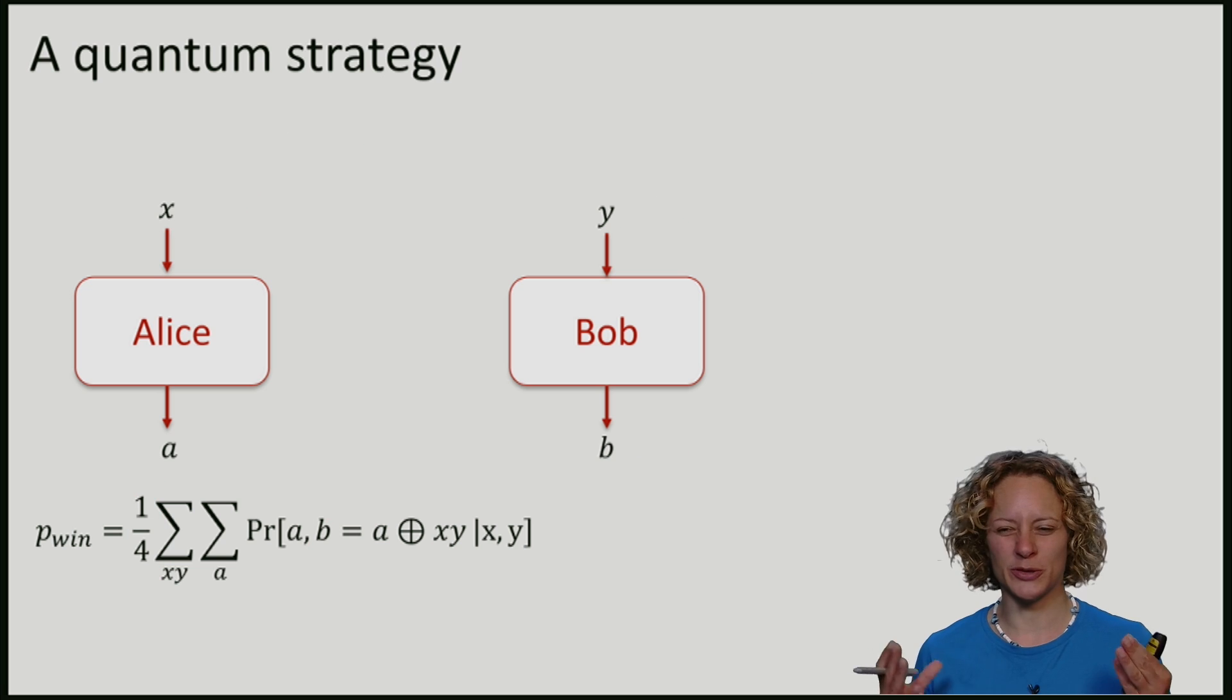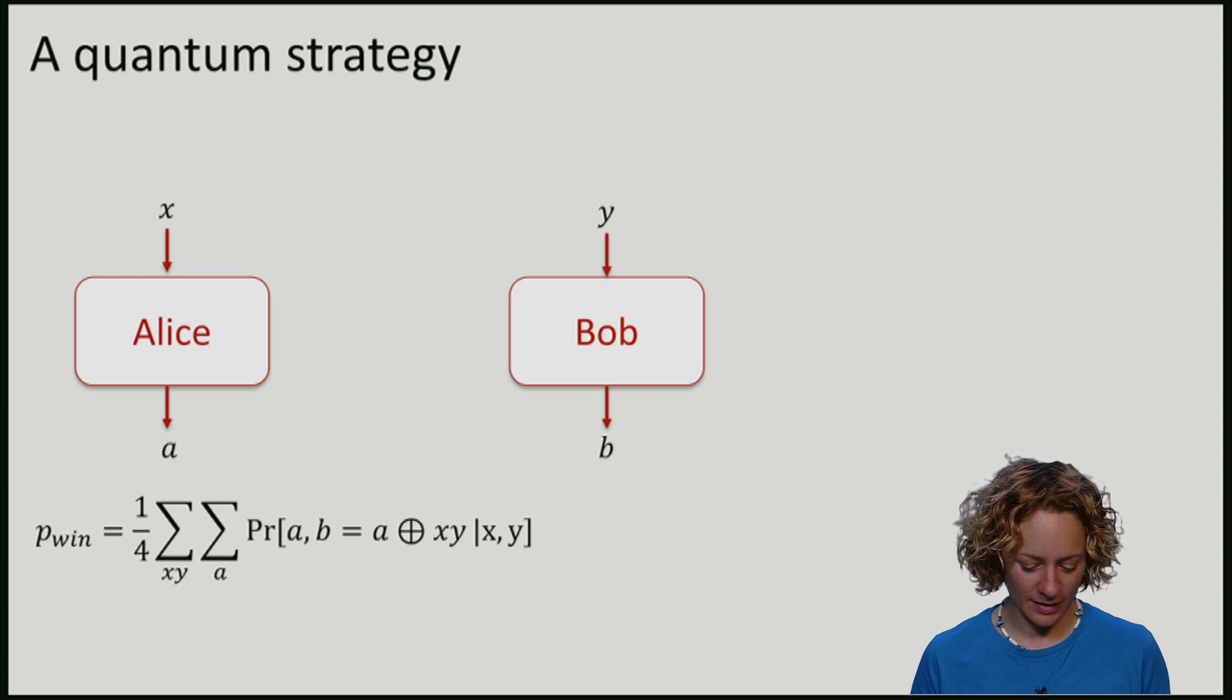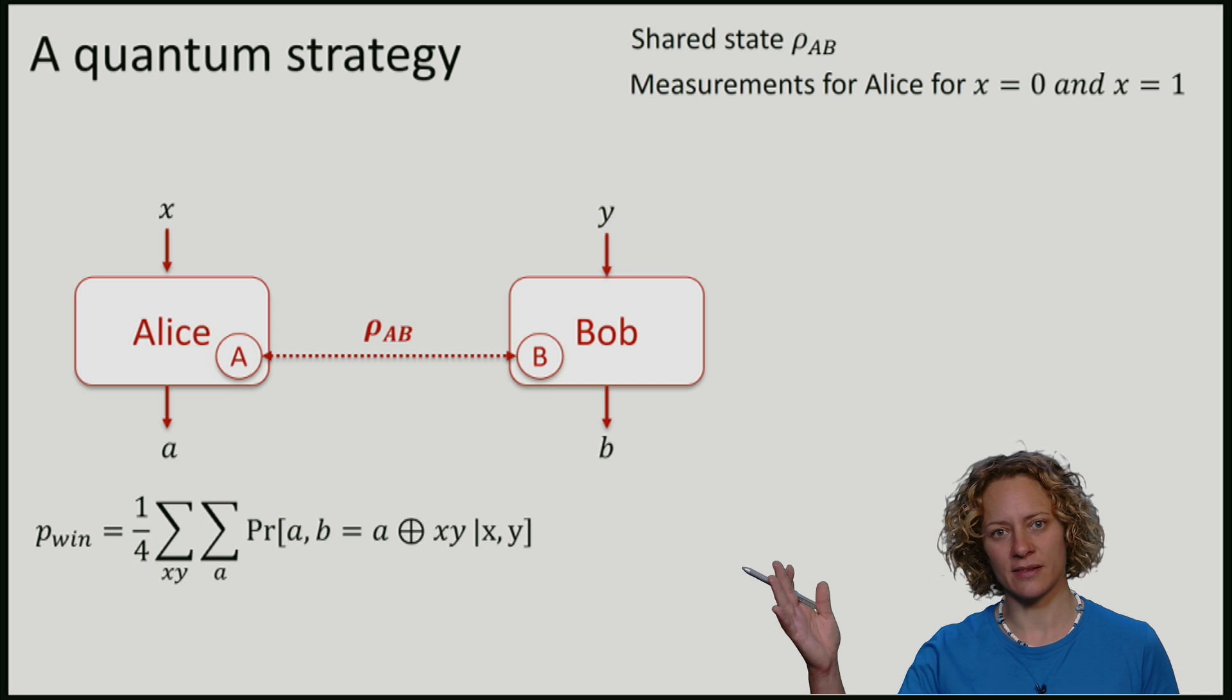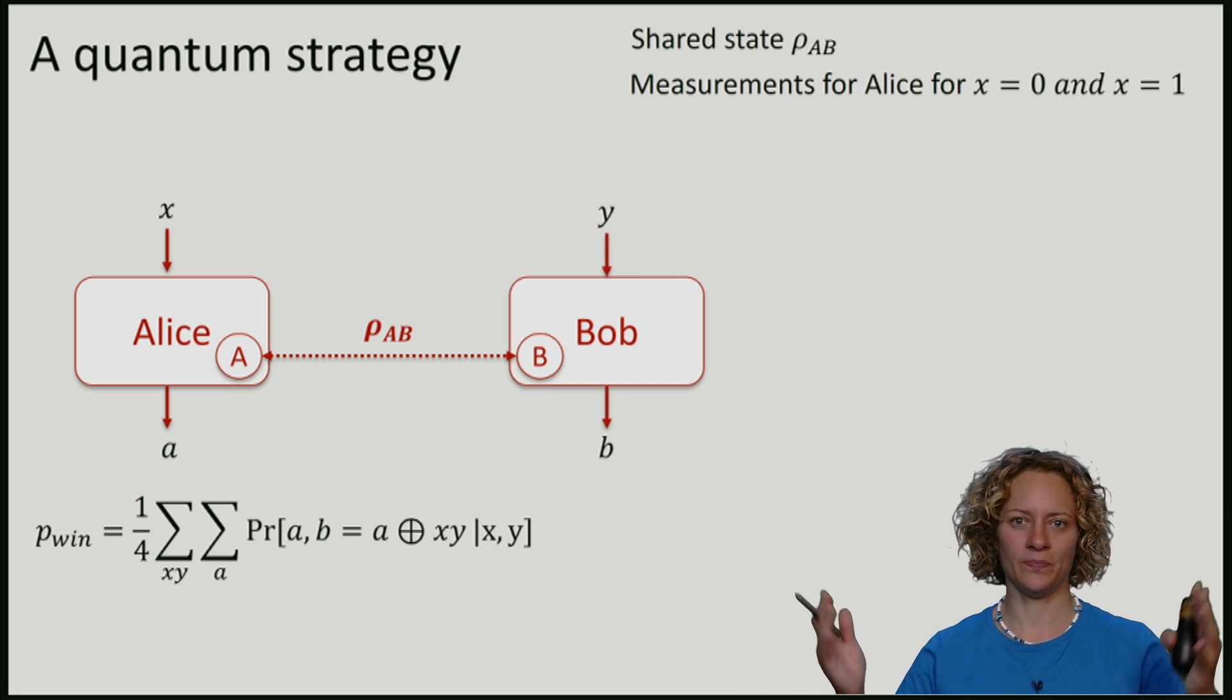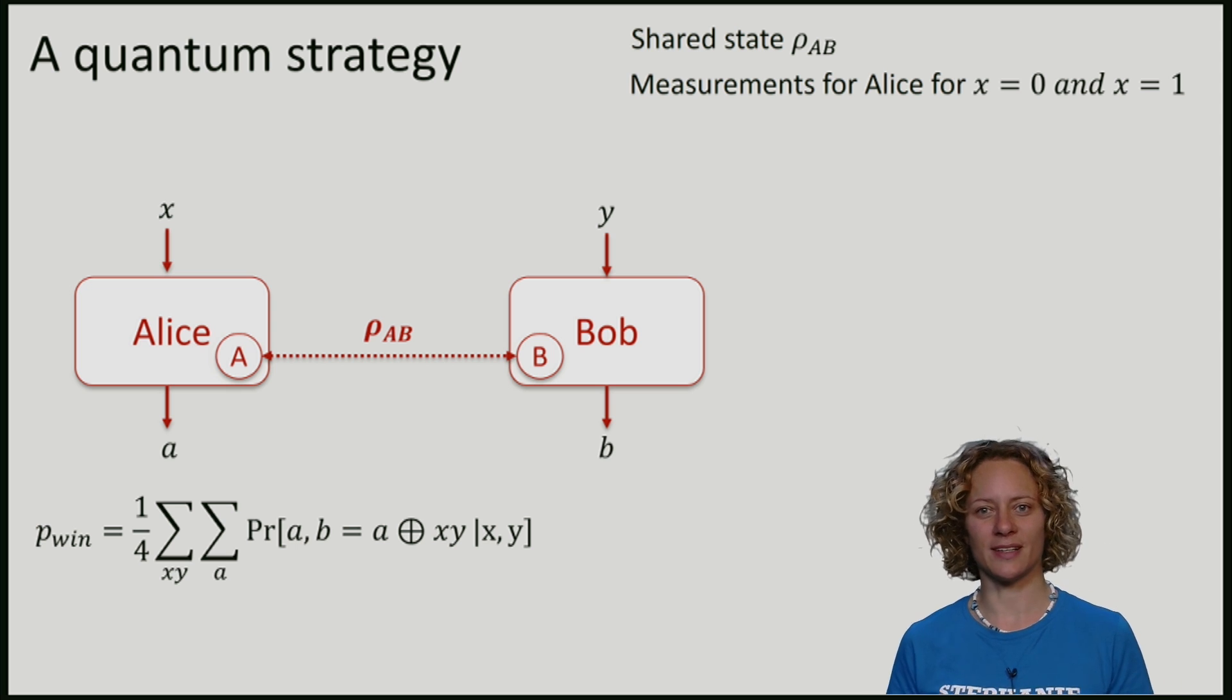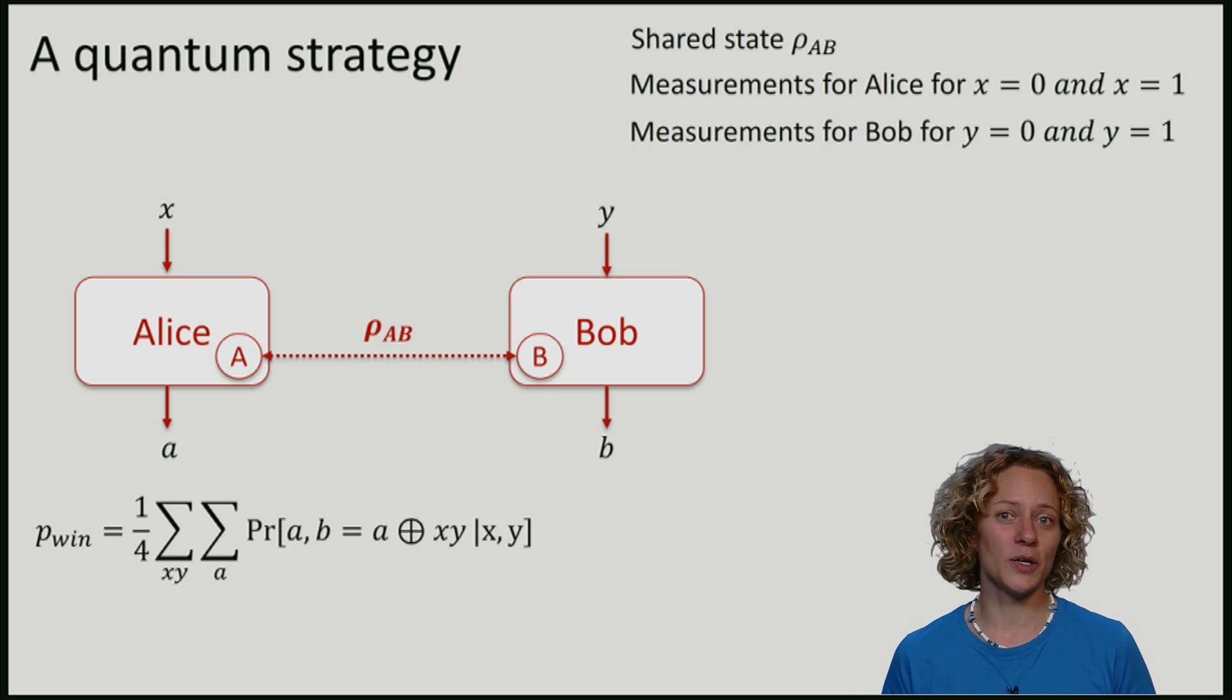So what is this quantum strategy? Alice and Bob can pick whatever state rho AB they want to share before they start the game. They can also decide on what measurements to make. You should be thinking here that Alice has two measurements. She will make one if the question x is zero and she will make the other if x equals one. And the answer that she's going to give is nothing else but her measurement outcome. Similarly, Bob can decide on two measurements, one for y being zero and the other for y being one. And his answer b is just the measurement outcome.